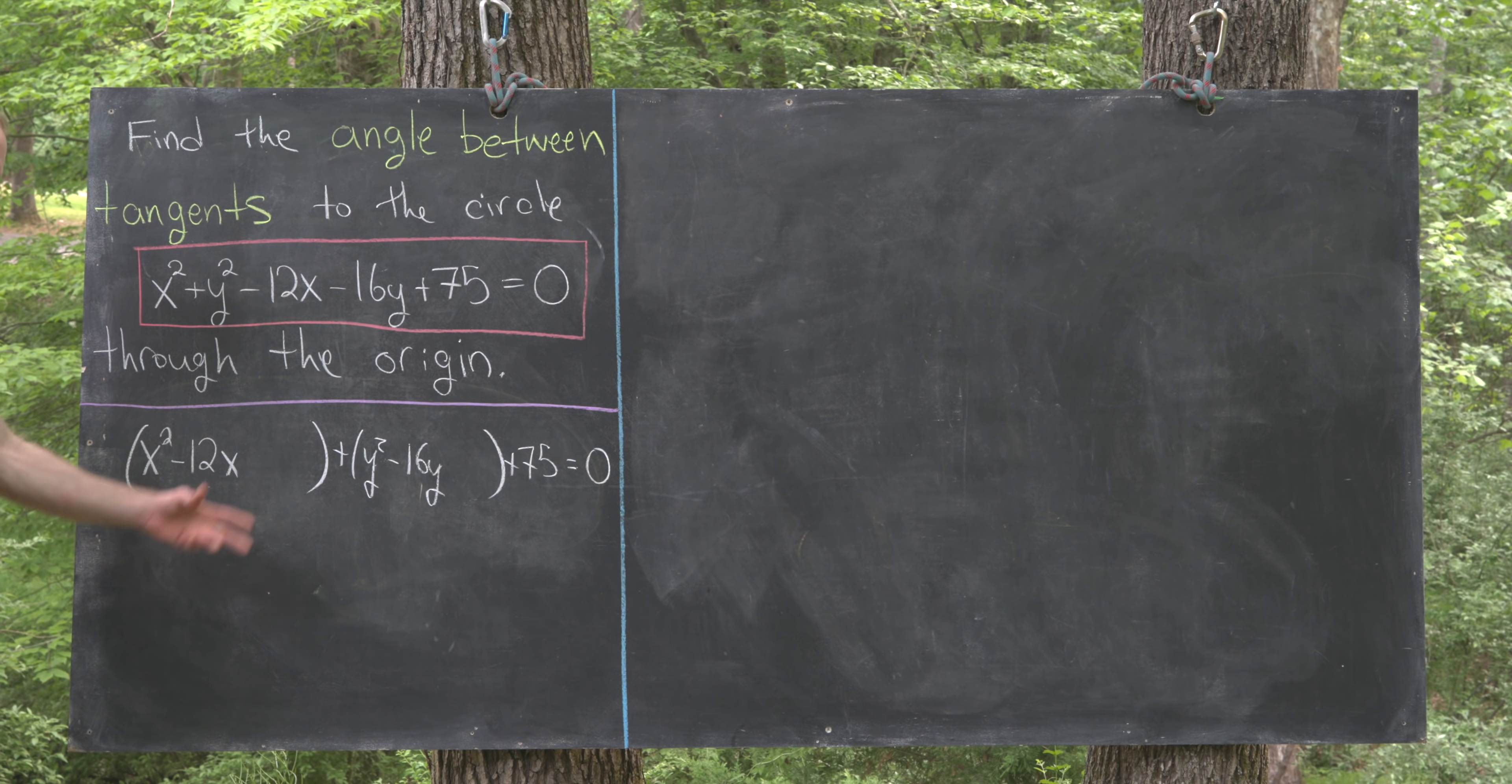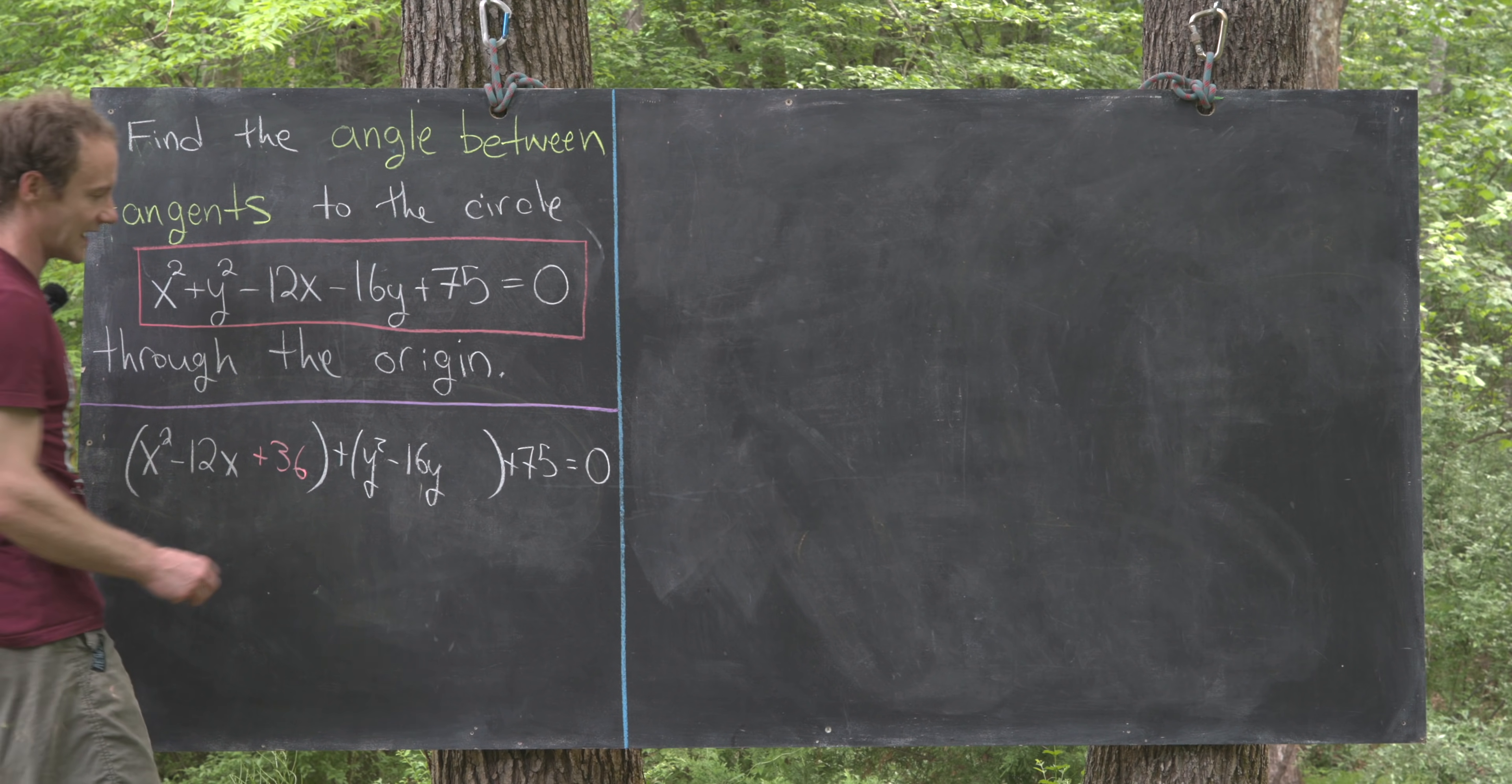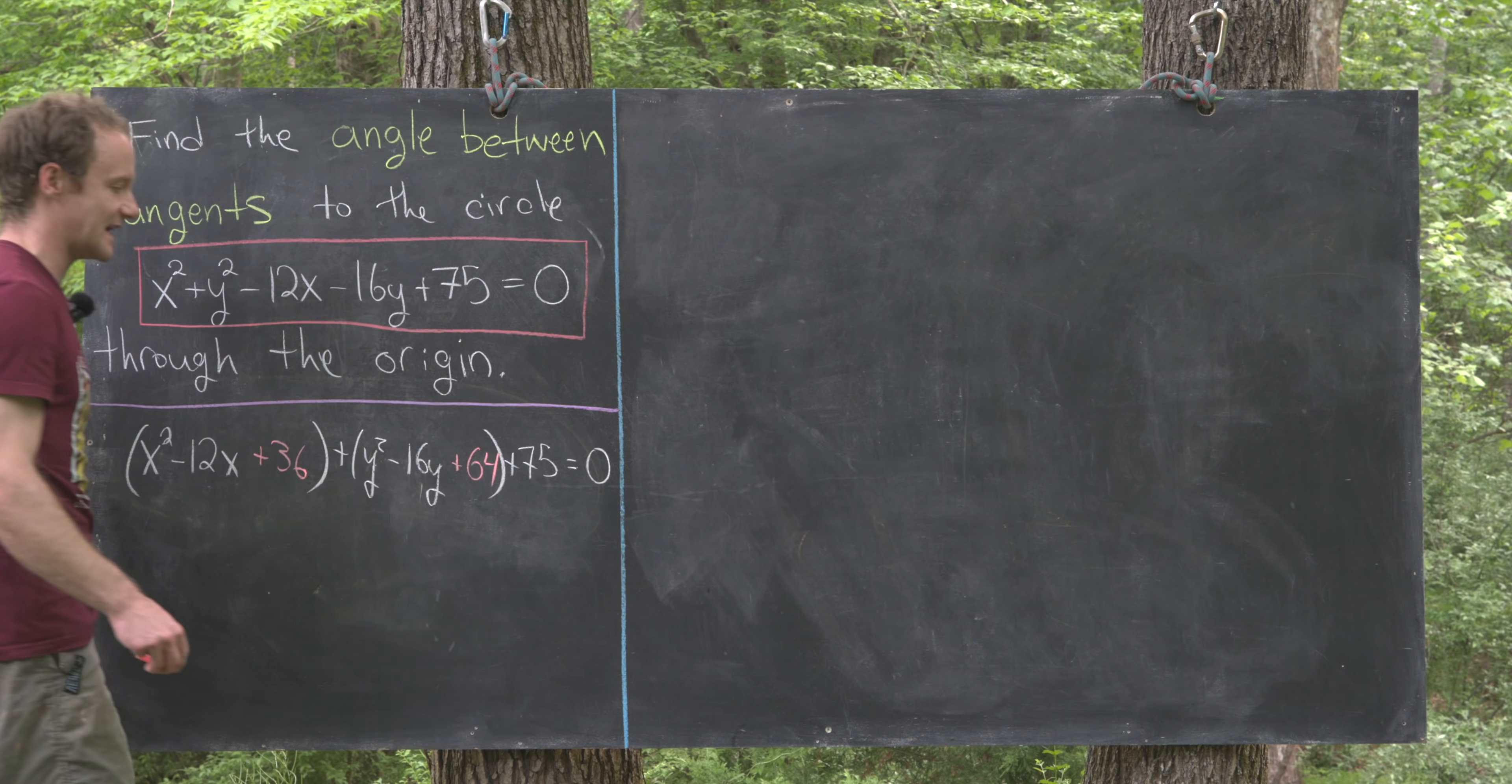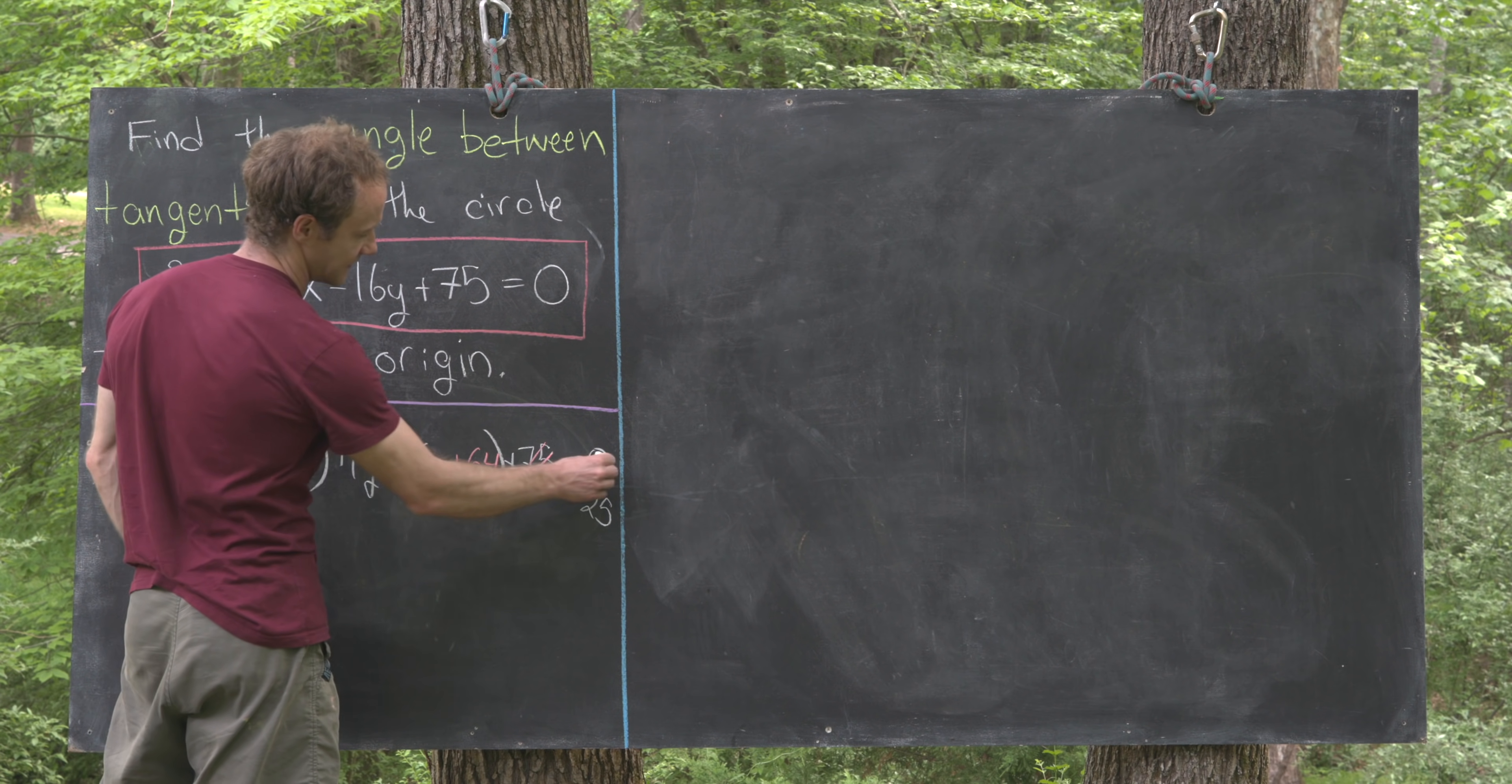To complete the square of these quadratic type terms, you take half of the middle term and square it. Half of negative 12 is negative 6, squared is 36, so we'll add 36 here. Half of 16 is 8, squared is 64. We've added 36 plus 64, which is 100. We might as well take this 75 and only add 25 to the right-hand side.